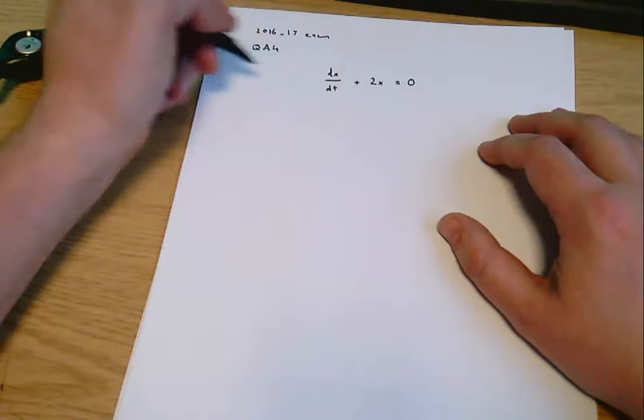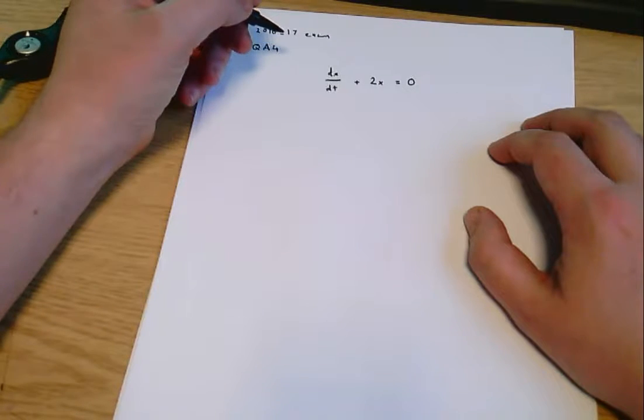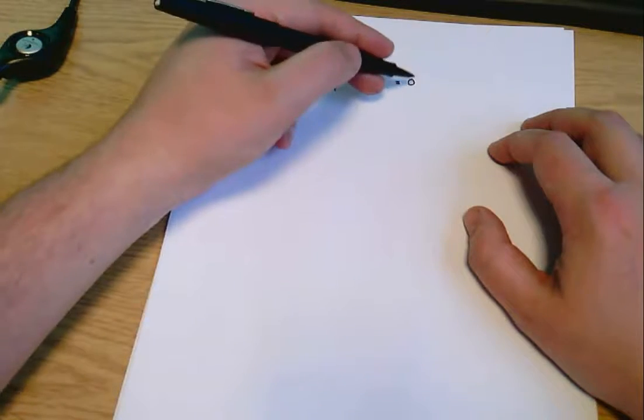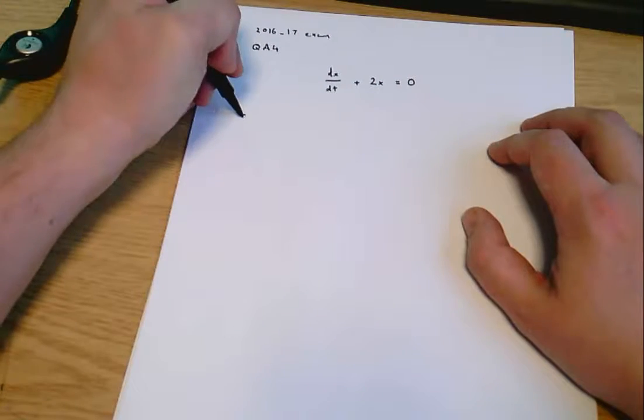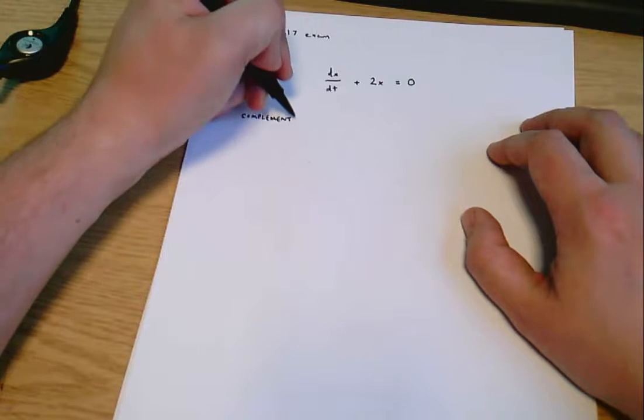In general when we talk about differential equations we've thought about complementary functions and particular integrals, and here the right hand side is zero so effectively we're just looking for the complementary function. There is no particular integral when the right hand side equals zero.